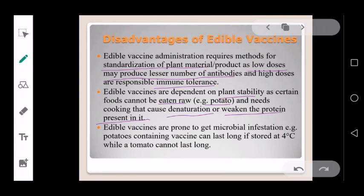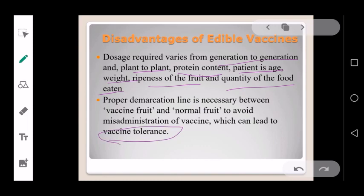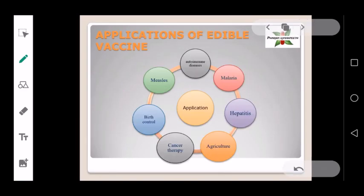Edible vaccines are prone to microbial infestation. For example, potato-containing vaccines can last longer if stored at 4°C or below, while tomatoes cannot last as long. Additionally, dosage varies from generation to generation, plant to plant, and depends on protein content, patient age and weight, ripeness of the fruit, and quality of food consumed. Proper demarcation between vaccine fruit and normal food is necessary to avoid misadministration and vaccine tolerance.